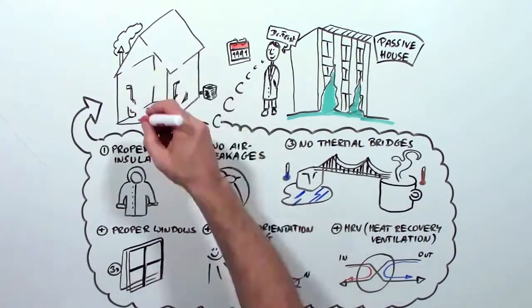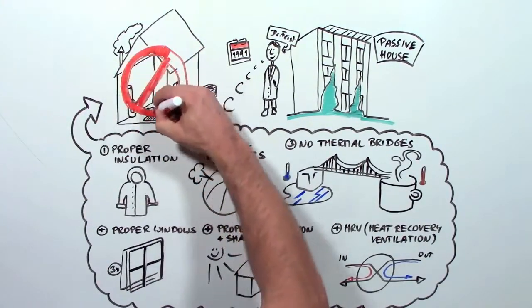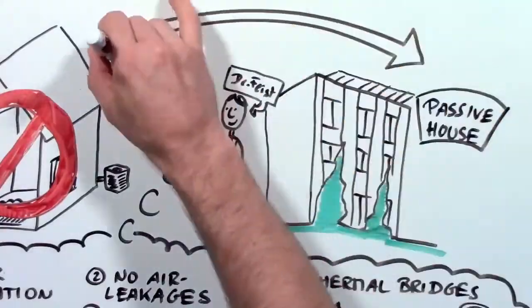Add all these things up, and it turns out your house doesn't need a heater or air conditioner. So where does the heat come from?